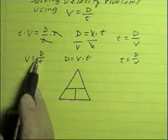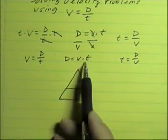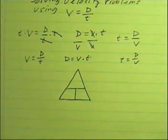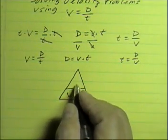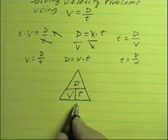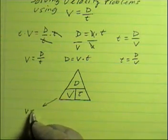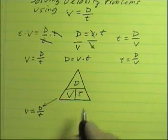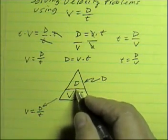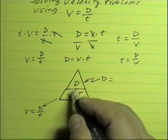If you notice in the original equation, that division line is a horizontal line — that now becomes a division line in the triangle. You'll notice that the multiplication symbol corresponds to this vertical line. So we know that velocity is equal to displacement divided by time. That gives us a way to solve for any of these three variables. Displacement is equal to velocity times time — that vertical line is a multiplication symbol — velocity times time.